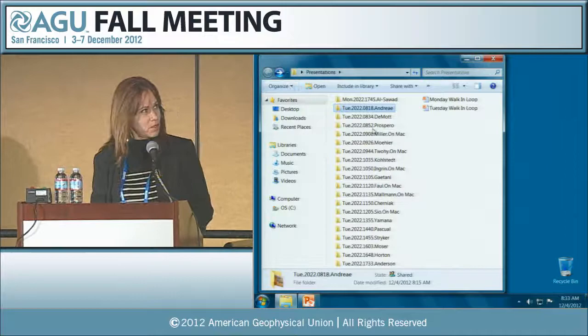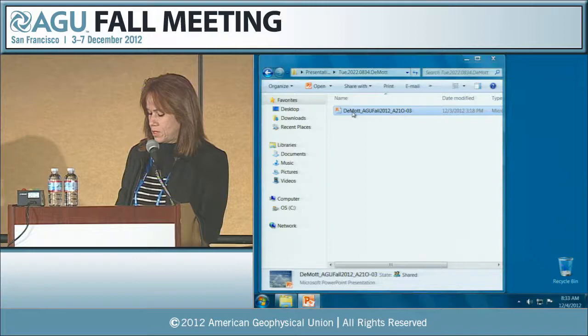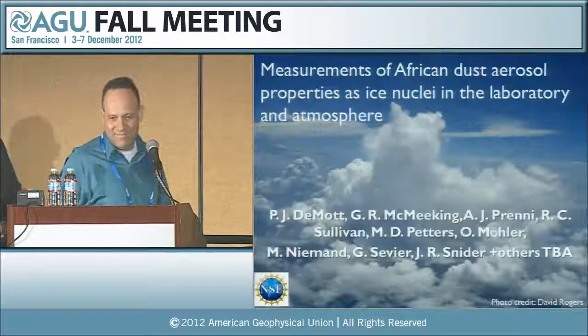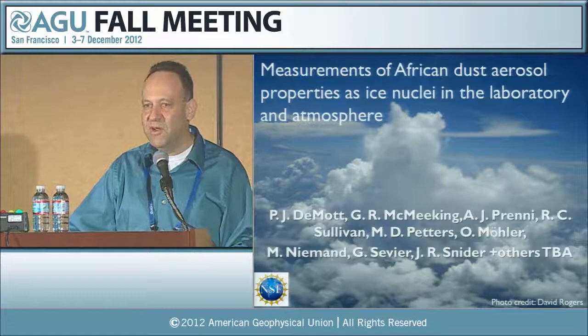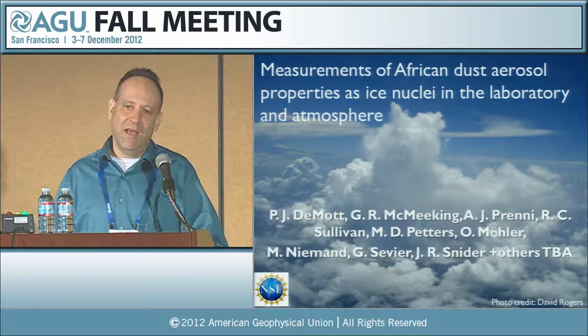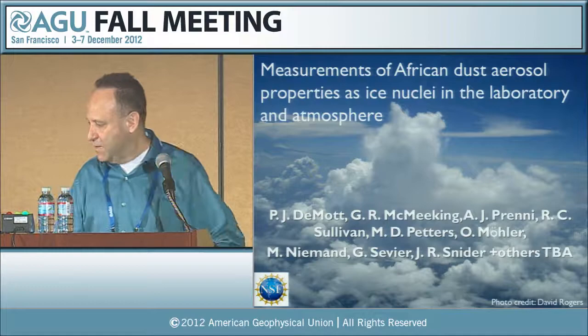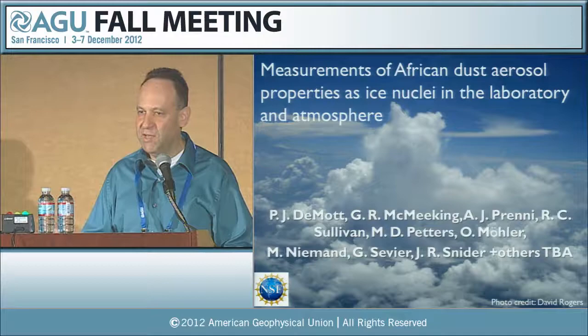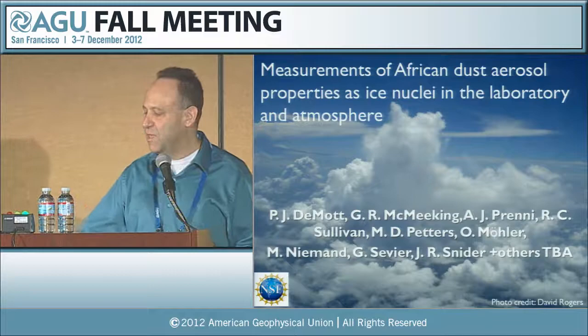We'd like to introduce our next speaker, Paul DeMott from Colorado State University in Fort Collins. This image from our project about a year ago in the summertime is the end-product motivation of the research I'm going to talk about today. The goal is: whether we're dealing with a pristine marine boundary layer feeding cloud systems or ones impacted by African dust, is there a difference in the evolution of cloud microphysics and precipitation?